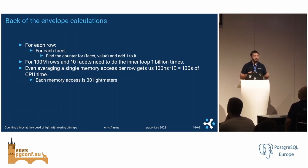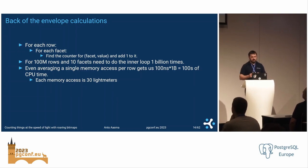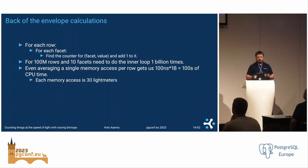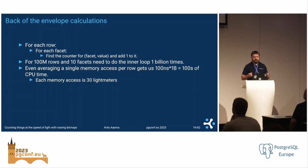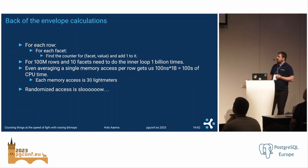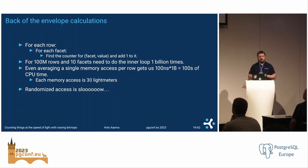What is the core of the problem? Let's do some back-of-the-envelope calculations. For each row in our search result and for each facet, we need to find where the counter is and add one to it. We need to do this one billion times because we have 100 million rows and 10 facets. A single memory access is 100 nanoseconds, times one billion — that's 100 seconds of CPU time. If you imagine memory access as the time it takes for light to get from here to the other side of the room, randomized access is slow.